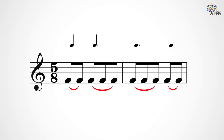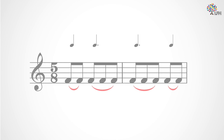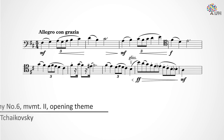Here are a couple of examples of 5/8 and 5/4 time dividing into groups of 2+3 eighth notes and then 3+2 eighth notes. In real-life musical examples, you could see 3+2 divisions, 2+3 divisions, or you may not hear where the groups are, or the groupings may change throughout.